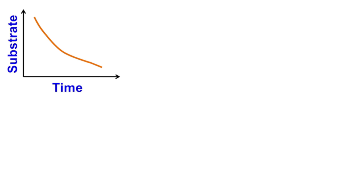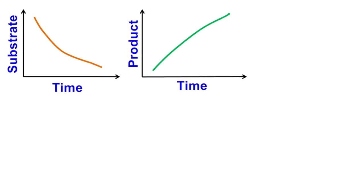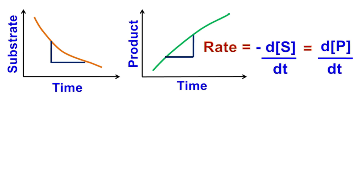Hence, with respect to time, the concentration of substrate decreases and the concentration of product increases. Taking the slope of the graph gives information about the rate of reaction. There is a change in concentration with respect to time, hence we can also call this the velocity of the reaction.